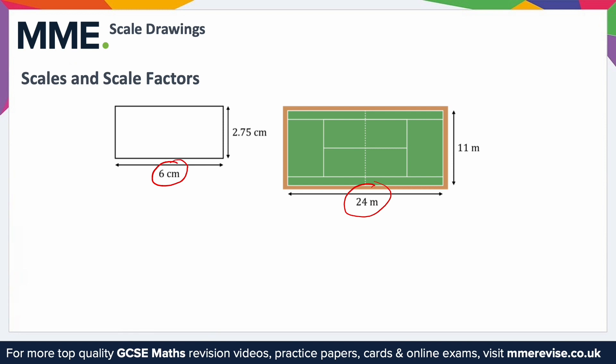From there we effectively set up a ratio: 6cm to 24m. You might say the scale factor is 4, since to go from 6 to 24 you multiply by 4. But because one measurement is in centimetres and the other is in metres, we need to convert them both to the same unit. It's up to you which unit you choose — centimetres, metres, or another — as long as they match.